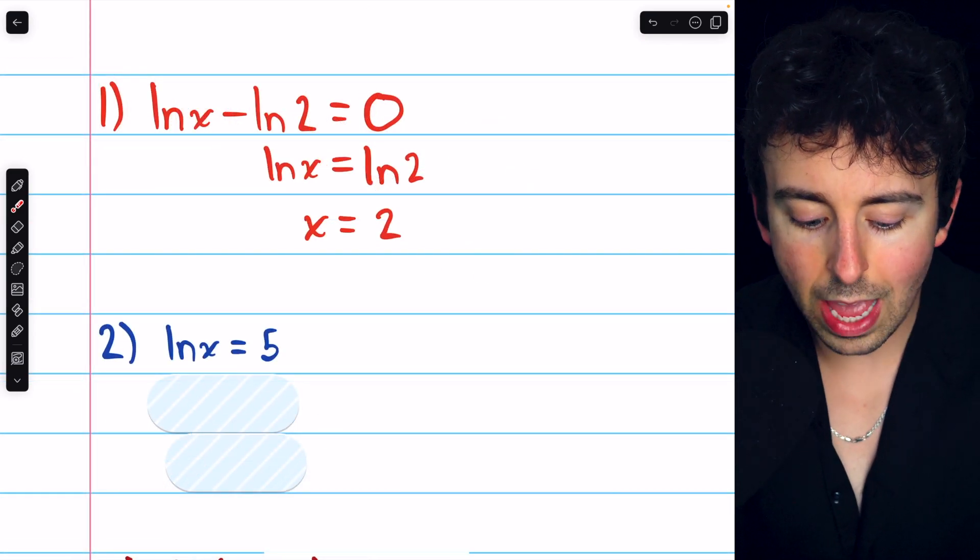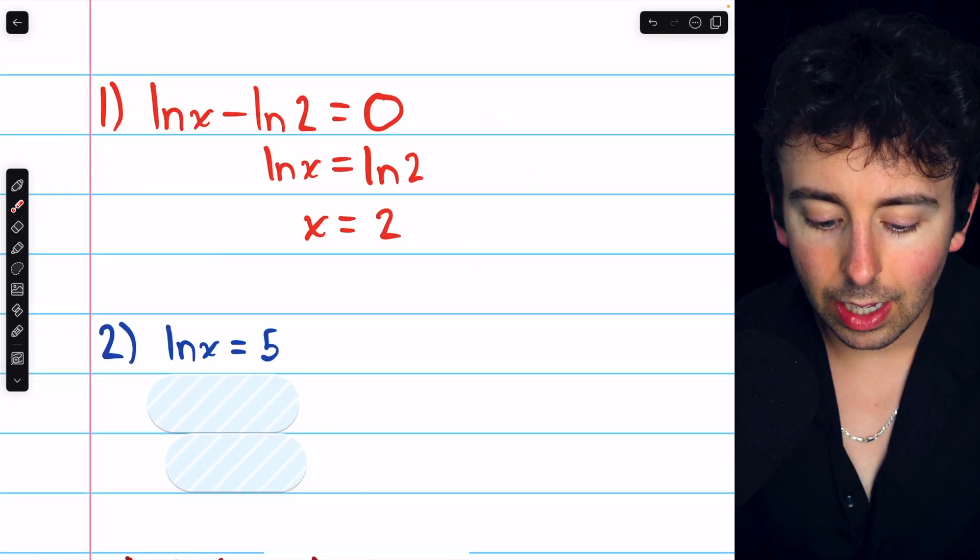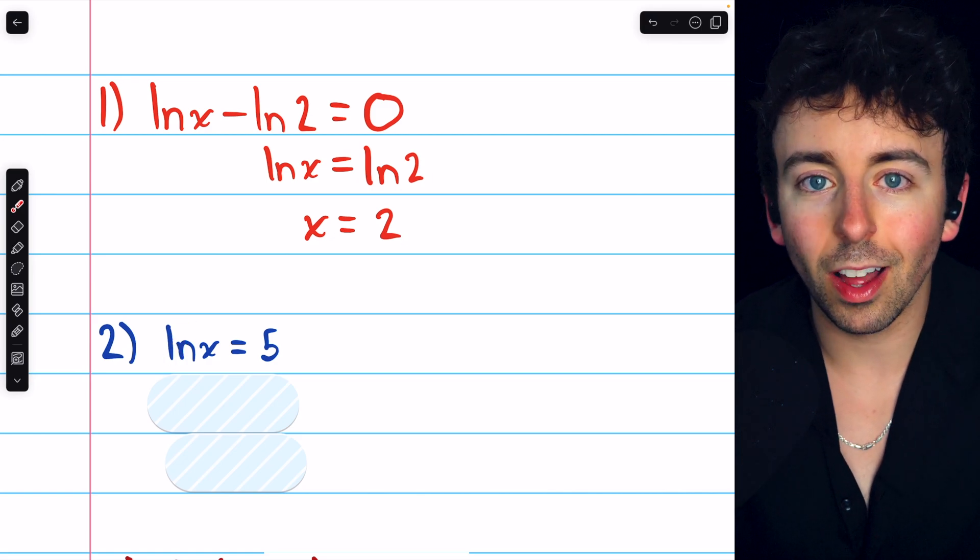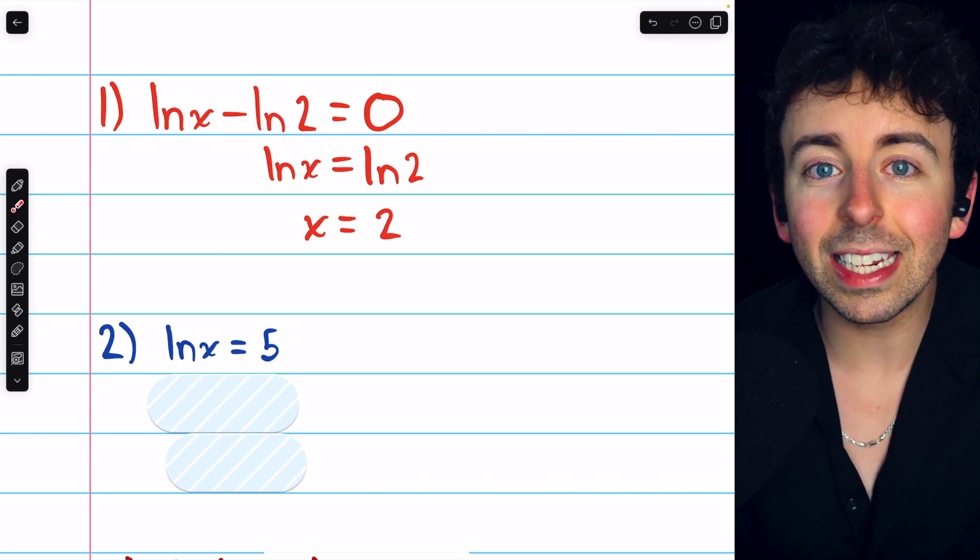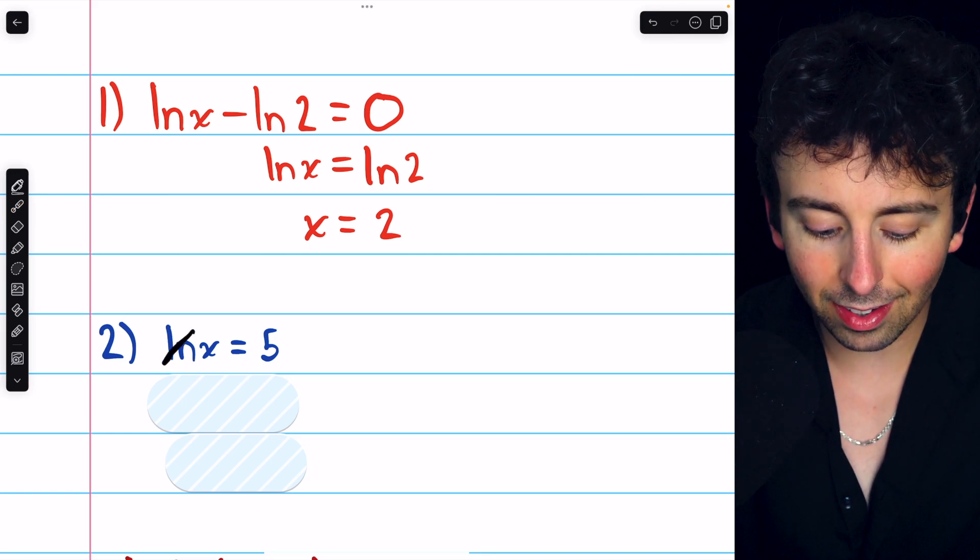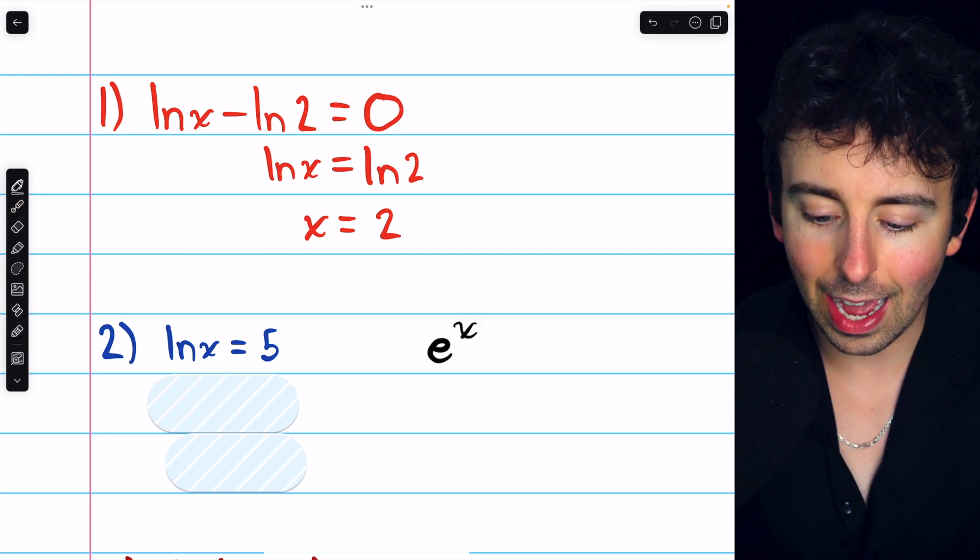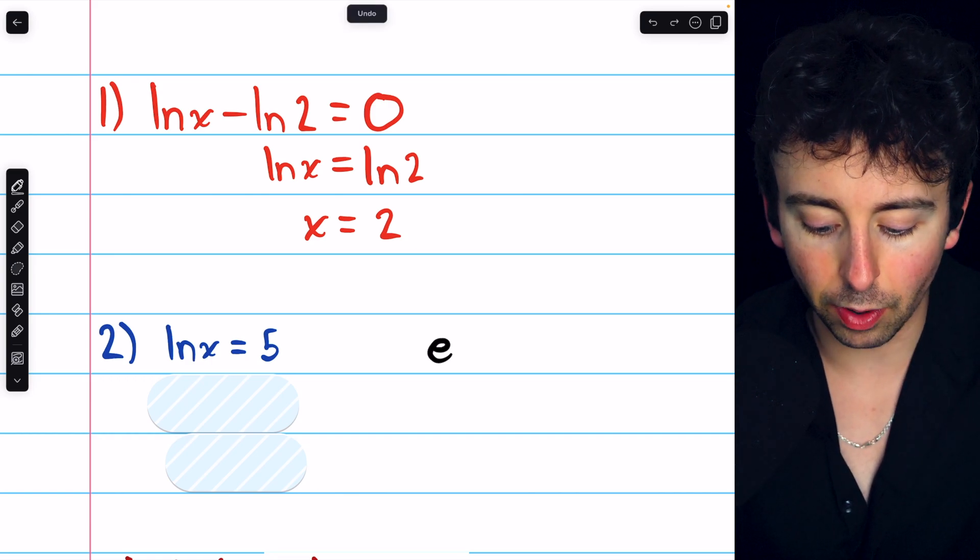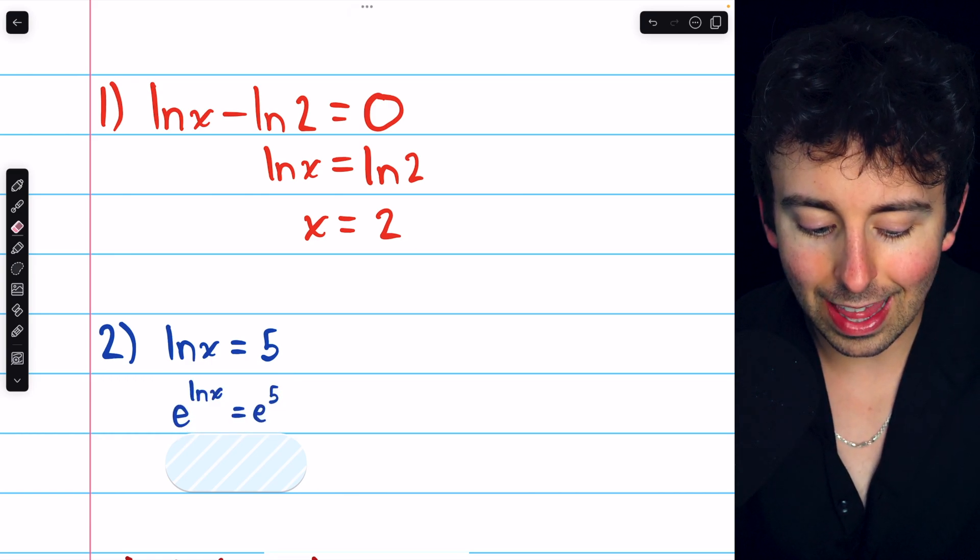In problem two, we have lnx equals five. In this problem, we have a single natural log that's all by itself, so we can easily exponentiate both sides of the equation to cancel out the natural log. Remember that e to the x and lnx are inverses, so that looks like this.